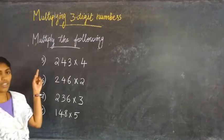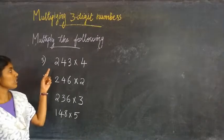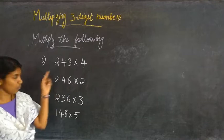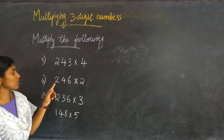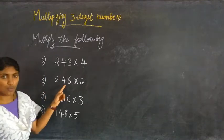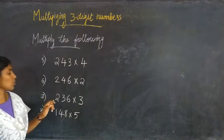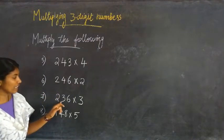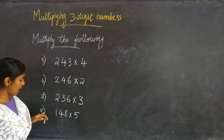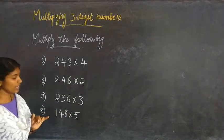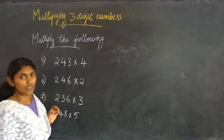Now the 5th question: 243 into 4. 6th question: 246 into 2. 7th question: 236 into 3. And 8th question: 148 into 5. We will now solve these.